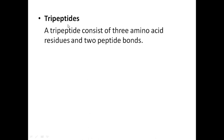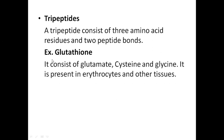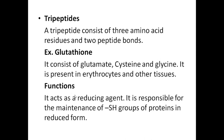Tripeptides: tri means three amino acids linked together by two peptide bonds. A very good example for a tripeptide is glutathione, which consists of three amino acids: glutamate, cysteine, and glycine. It is present in erythrocytes and other tissues. Its main function is that it acts as a reducing agent, and it is responsible for the maintenance of SH groups of proteins in the reduced form.